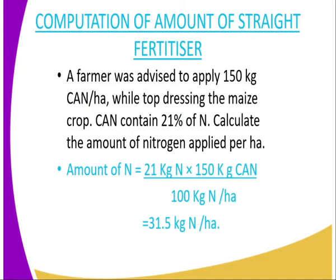Now we have computational fertilizer of a straight fertilizer. Here is an example: a farmer was advised to apply 150 kg of CAN — calcium ammonium nitrate fertilizer — per hectare while top-dressing the maize crop. CAN contains 21% of nitrogen. Calculate the amount of nitrogen applied per hectare. The amount is given by the analysis, that is 21%, multiplied by the amount of fertilizer required, and the value becomes 31.5 kg of nitrogen per hectare.